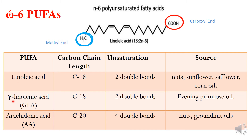The next example is gamma-linolenic acid, which also has an 18-carbon chain length and two double bonds, and it is commonly seen in evening primrose oil. The next common example is arachidonic acid, which has a 20-carbon chain length with four double bonds, and the food sources include nuts and groundnut oil, which are the richest source of arachidonic acid.